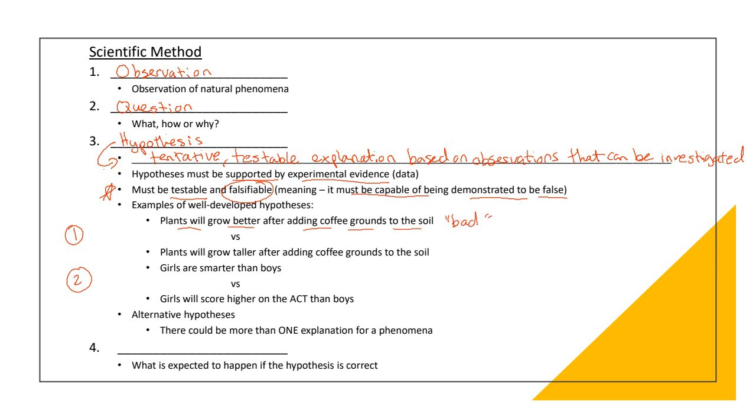Well, the reason why it's not a good hypothesis is because plants will grow better. What is better? If you think about a plant growing better, many people can have different definitions of what better is for a plant. It could be taller, it could be wider, it could be leafier, it could be greener. It could be a lot of things. So, what is better?